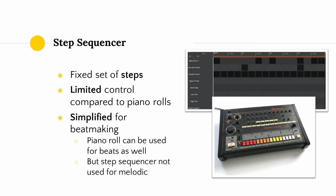Step sequencers are meant to emulate the characteristics of hardware drum machines, which behaved much like step sequencers. Overall, they are meant to provide a more simplified approach to beat making. The piano roll can be used to make beats as well, but the step sequencer is confined to this role and is typically not used for melodic information.